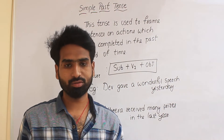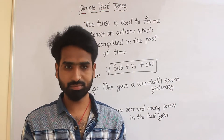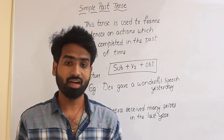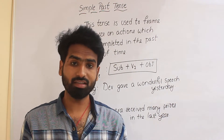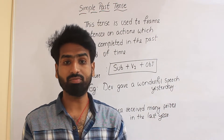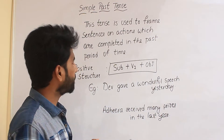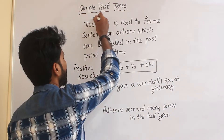Friends, we will talk about a total of 12 tenses. The verb in the second form — V2 — is used only in simple past tense.